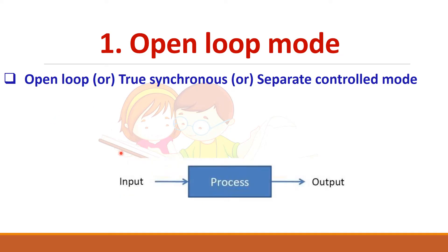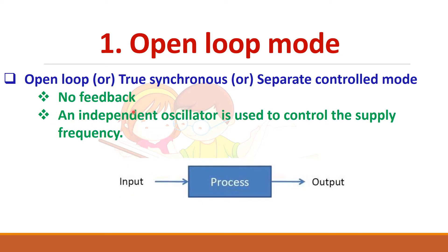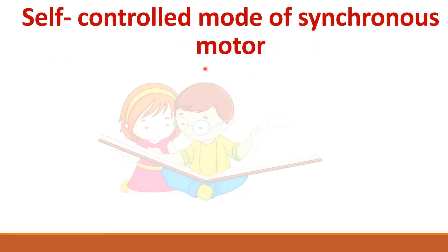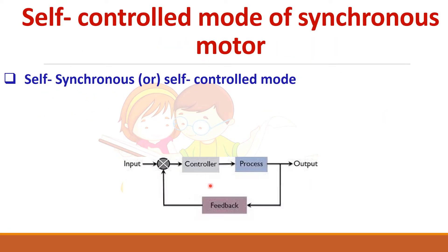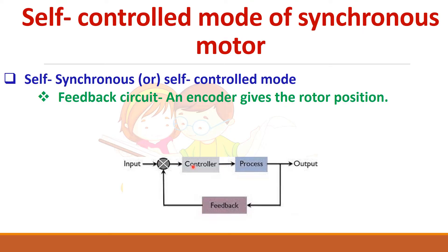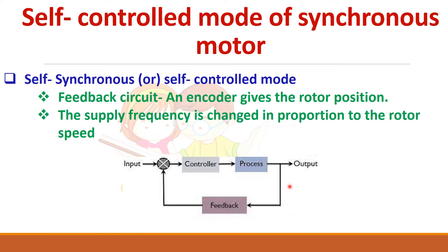In open loop mode, there is no feedback and an independent oscillator is used to control the supply frequency for the synchronous motor. In self-controlled mode, there will be a feedback from the output. The feedback circuit is an encoder which gives the rotor position, and from the rotor position, the supply frequency is calculated and given as input for the synchronous motor drive.